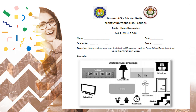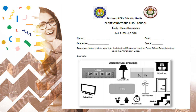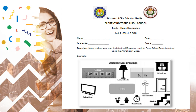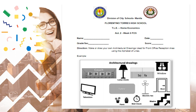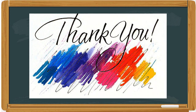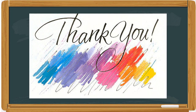For Activity 2, Week 6, make or draw your own architectural drawings used for a front office reception area using the alphabet of lines. An example is provided. All activities for this week have already been posted, so please visit and complete all of them. That's all for today. Thank you and God bless. Keep safe everyone.